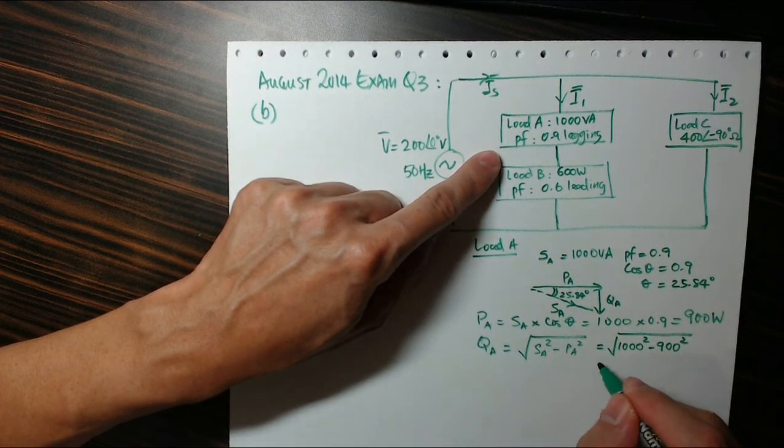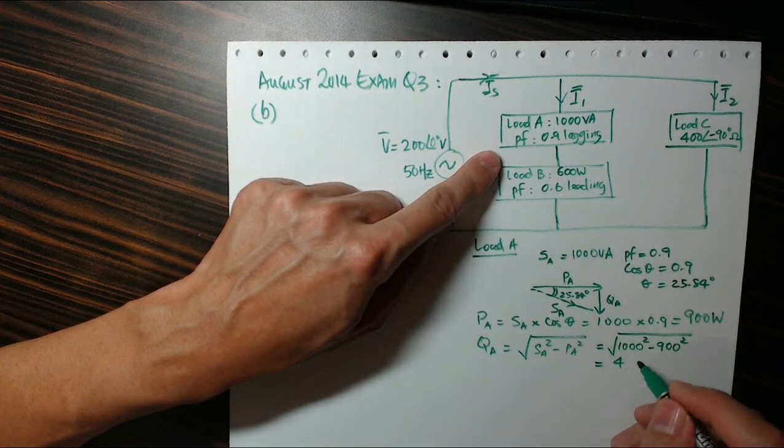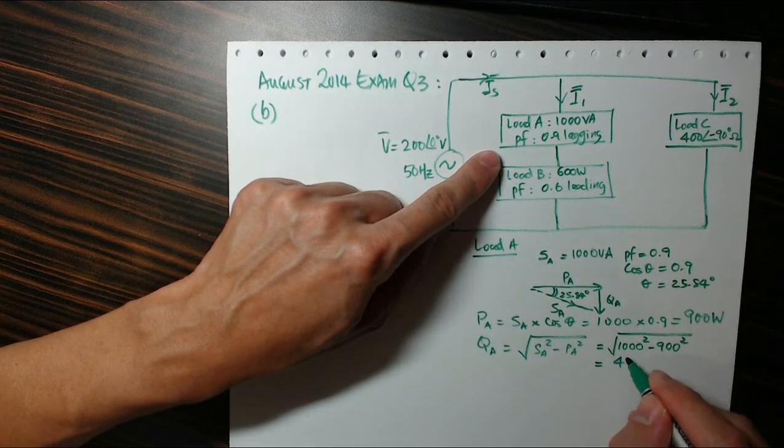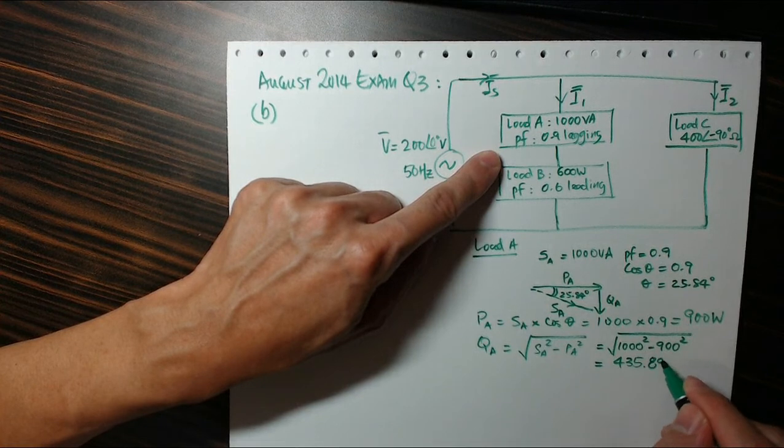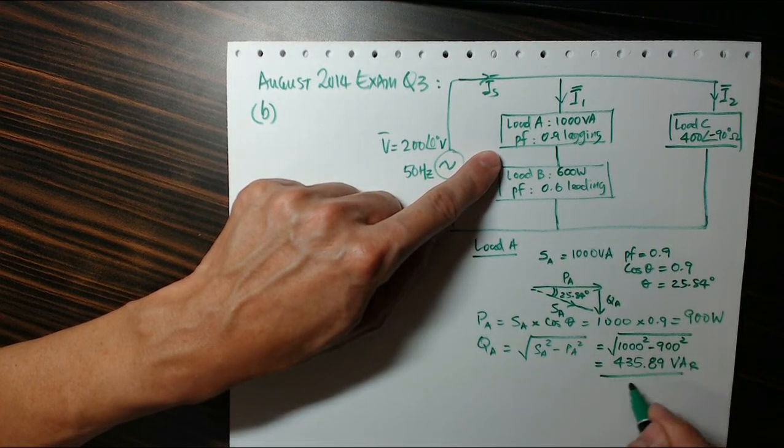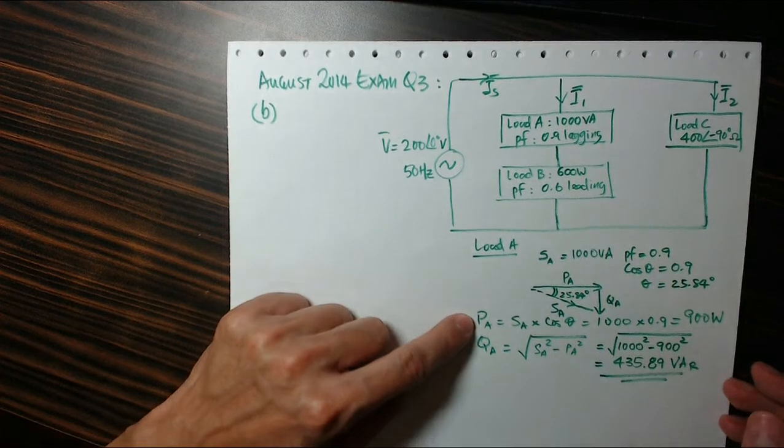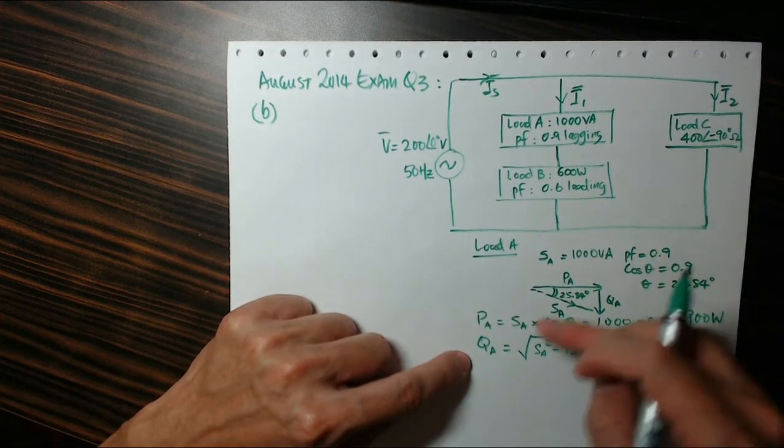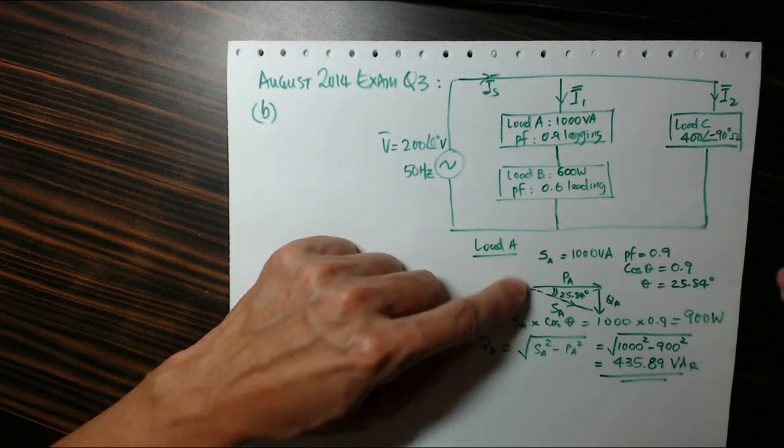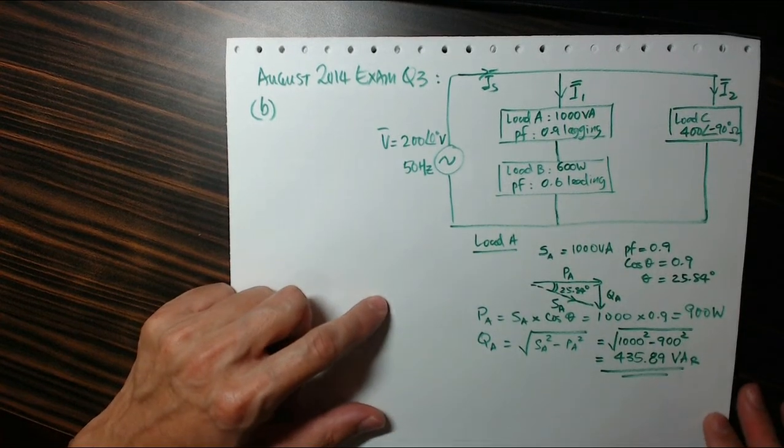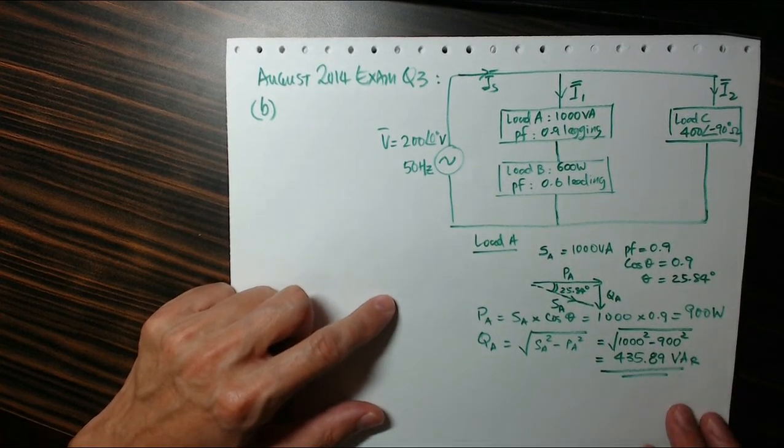QA is actually the square root of SA squared minus PA squared. So that's 1000 squared minus 900 squared, which gives me 435.89 VAR. So this is the real power of load A, this is the reactive power of load A, and the complex power of load A is 1000 VA.